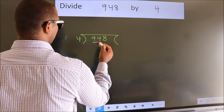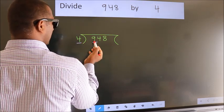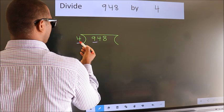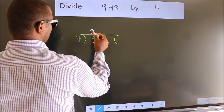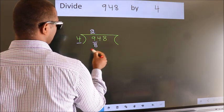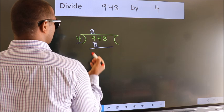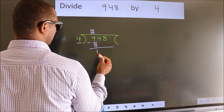Here we have 9, here 4. A number close to 9 in 4 table is 4 times 2 is 8. Now we should subtract. We get 1.